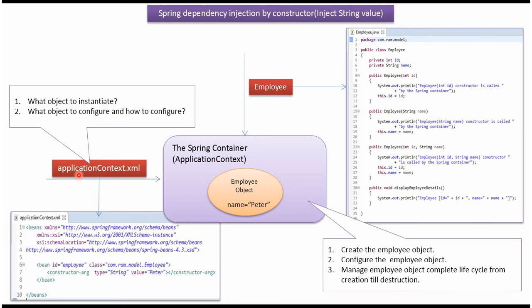What object to instantiate, what object to configure, and how to configure — this information will be in the Spring configuration file. In this example, we have specified that the Employee object should be created by the Spring container and the name property of the Employee object should be set as Peter using constructor dependency injection.